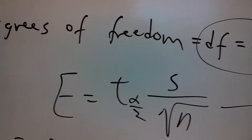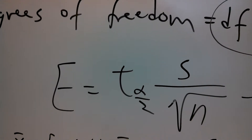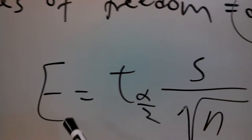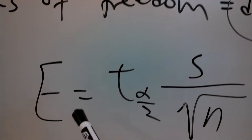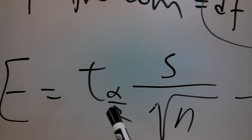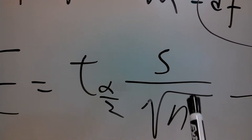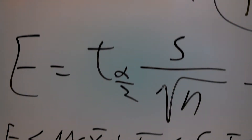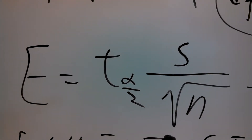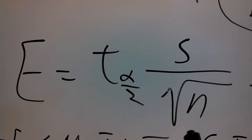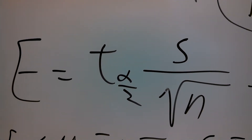The formula for the margin of error is: E equals T sub alpha over 2 times S divided by the square root of N. That's the formula we use to get the error. Once we get the error, we add it to the sample mean and we subtract it from the sample mean, and that gives us our confidence interval.